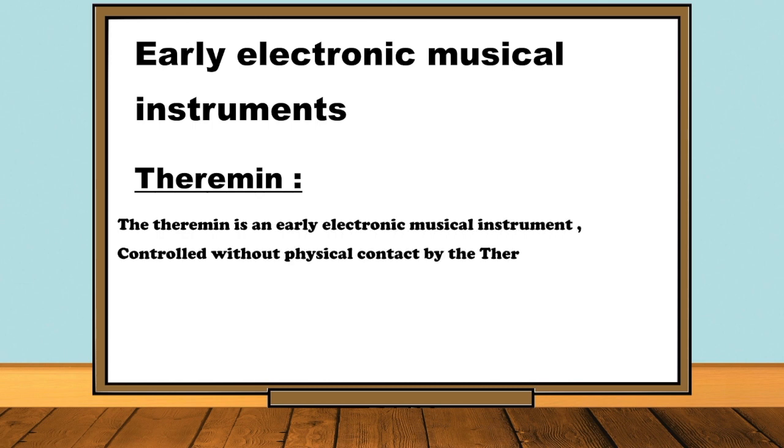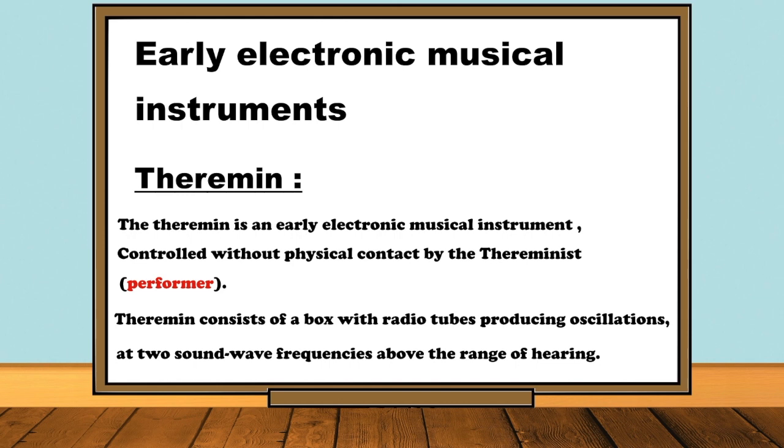The theremin is an early electronic musical instrument controlled without physical contact by the thereminist performer. The theremin consists of a box with radio tubes producing oscillations at two sound wave frequencies above the range of hearing.